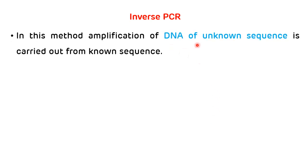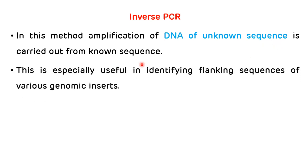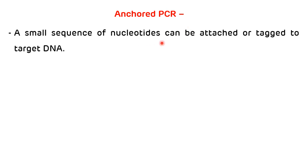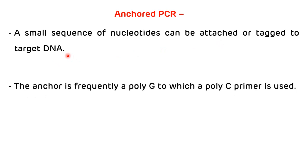The second-to-last type of PCR is inverse PCR. In this method, amplification of DNA of unknown sequence is carried out from a known sequence. This is especially useful in identifying flanking sequences of various genomic inserts. The last type of PCR is anchored PCR, in which a small sequence of nucleotides can be attached or tagged to the target DNA. The anchor is frequently a poly-G or poly-C primer.